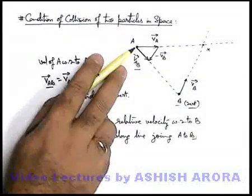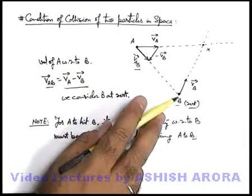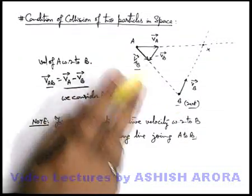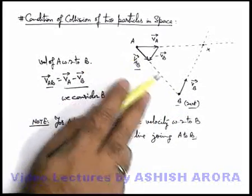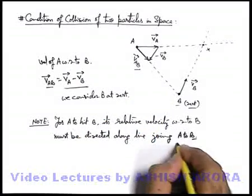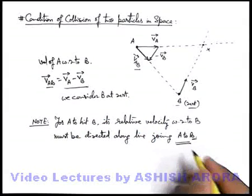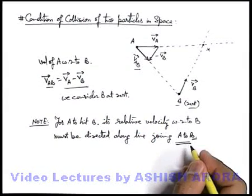If it is directed along the line joining A to B, that means if B is considered at rest, A appears to be moving directed toward B, so finally A is going to hit B. This is an important condition going to be used in so many cases, you'll see later.